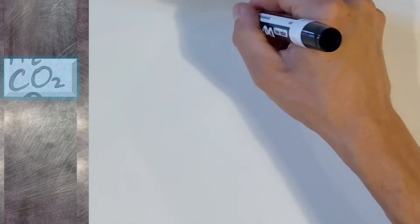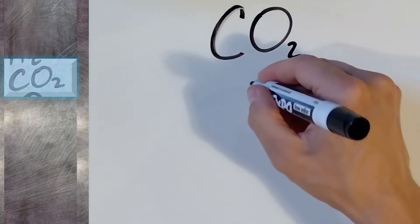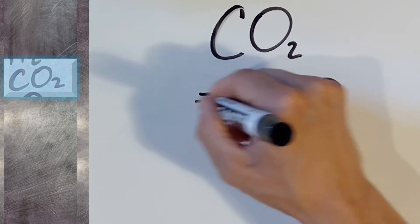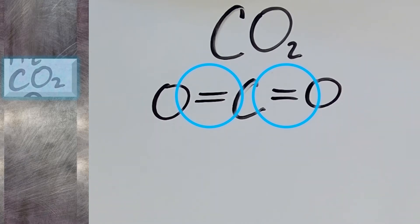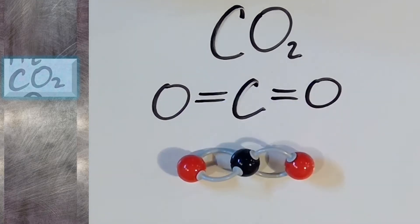Let's move on to carbon dioxide. Its molecular formula is CO2. It has one carbon atom and two oxygen atoms, and CO2's molecular formula is shown here. Notice this weird bond — this is called a double bond. In this case, each oxygen atom forms two bonds. And if you count all the bonds that the carbon has, you will find four bonds. Here's carbon dioxide as a 3D model.